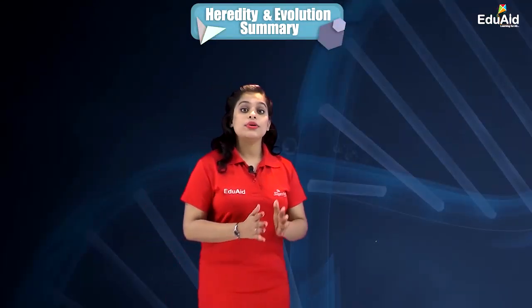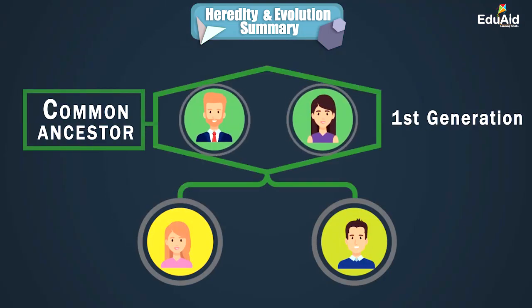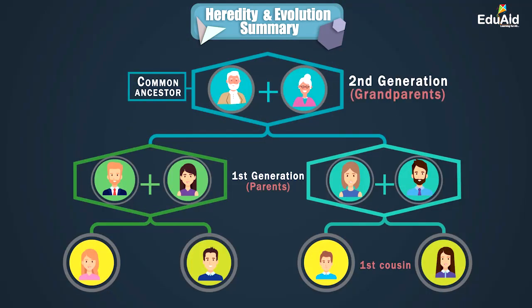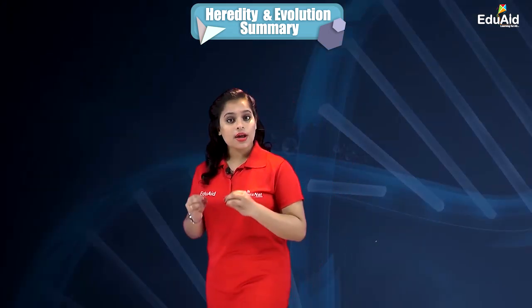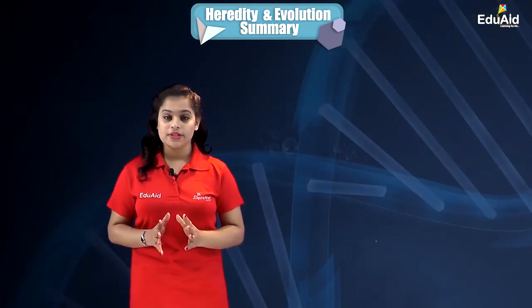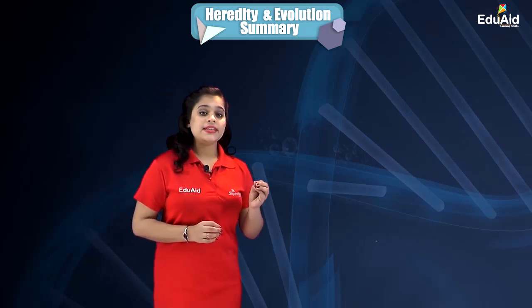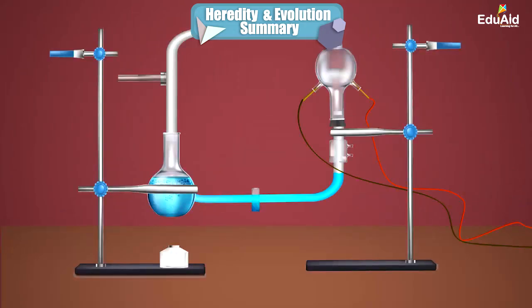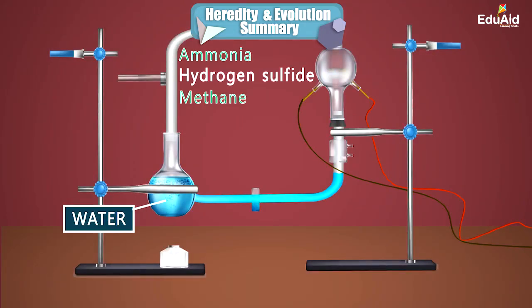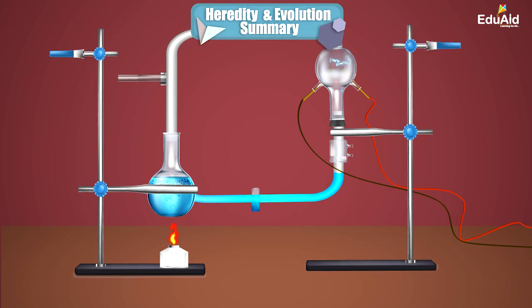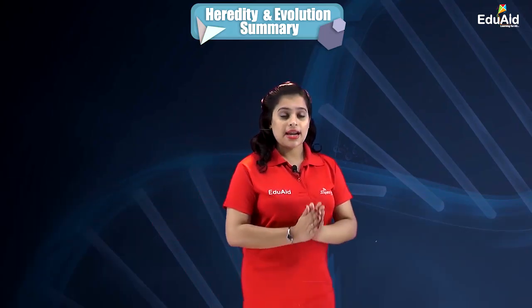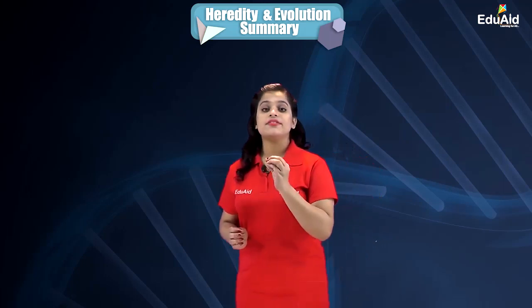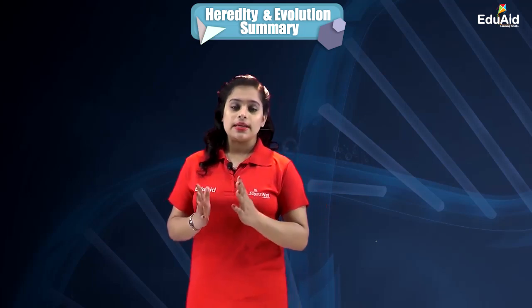We then learned how evolutionary relationships are traced in the classification of organisms, and how life originated on Earth from simple inorganic molecules. We studied the theory of the origin of life proposed by J.B.S. Haldane, and discussed Miller and Urey's experiment that confirmed Haldane's theory.